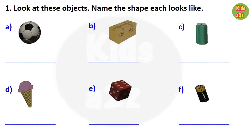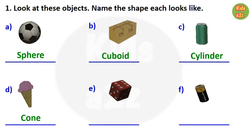Here in this worksheet, pictures of some objects are given and kids need to identify their shape and also need to write that in the blanks. Like under the first picture, they need to write sphere; then under the second picture, they need to write cuboid; the third picture is of a cylinder; the fourth picture is of a cone; under the fifth picture, they need to write cube; and the sixth picture is also a cylinder.